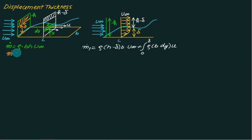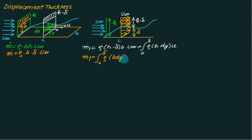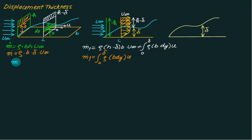Considering only the delta-height portion, the mass flow rate without plate is rho times b times delta times u-infinity, whereas with the plate it is the integral from 0 to delta of rho times b times u dy. Because of the plate insertion, there is a loss of mass. This loss is compensated by displacing the boundary layer by a certain thickness called the displacement thickness, represented by delta-asterisk (δ*).